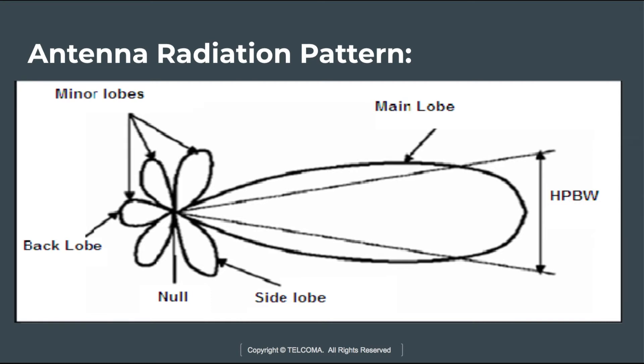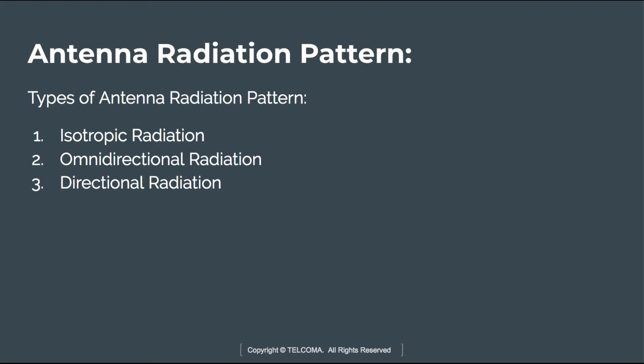That concludes the antenna radiation pattern. Next, we will discuss the types of antenna radiation patterns. There are three types: isotropic radiation, omnidirectional radiation, and directional radiation. Isotropic radiation means equal radiation in all directions, and it is represented by a sphere whose center coincides with the location of the isotropic radiator.